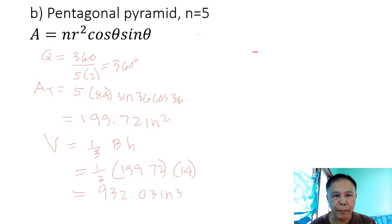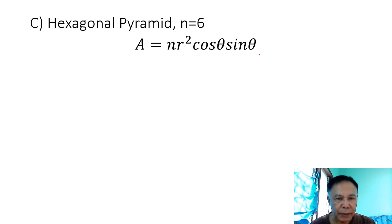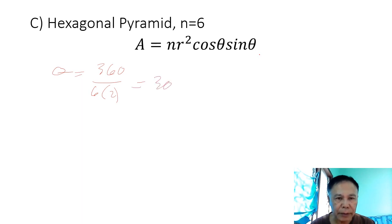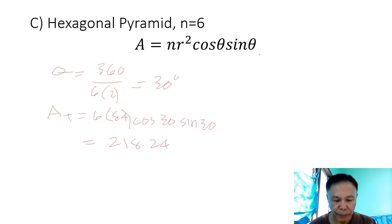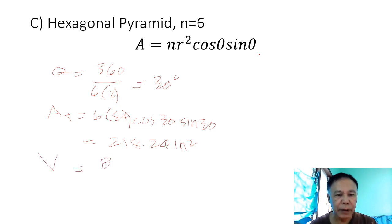For the hexagonal pyramid (n=6), your theta equals 360 over 6 times 2, equal to 30 degrees. So your total area at the base equals 6 times R squared (84) times cosine 30 times sine 30, equivalent to 218.24 in². So your volume equals base times height all over 3.